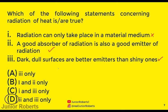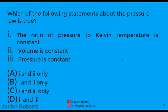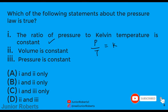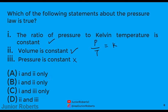This question asks which statement about the pressure law is true. The ratio of pressure to Kelvin temperature is constant — P/T = constant k — is true. Volume is constant is true, but pressure is not constant. Therefore the answer is B: one and two only.